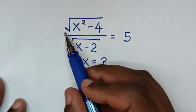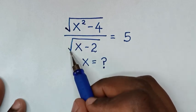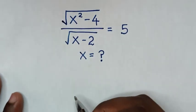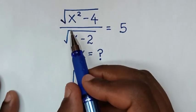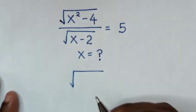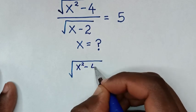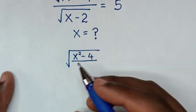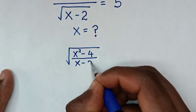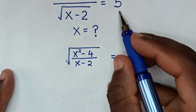So from here we have square root in the numerator and also we have square root in the denominator. So it will be square root of x square minus 4 over x minus 2 is equal to 5.